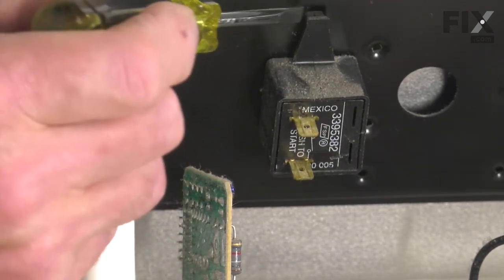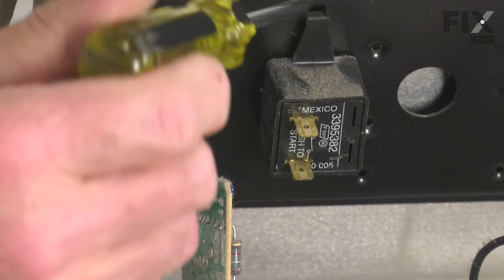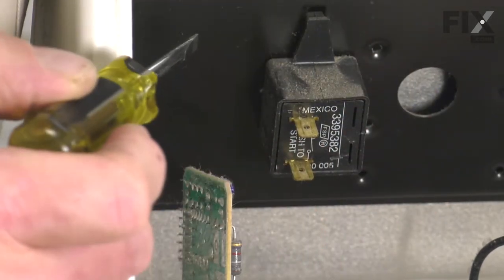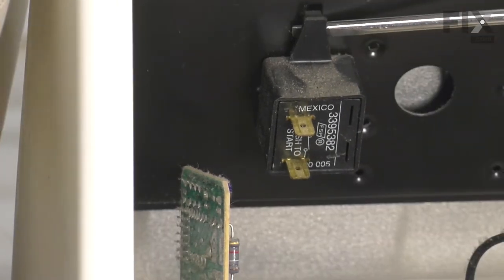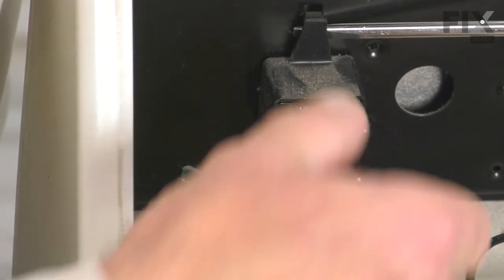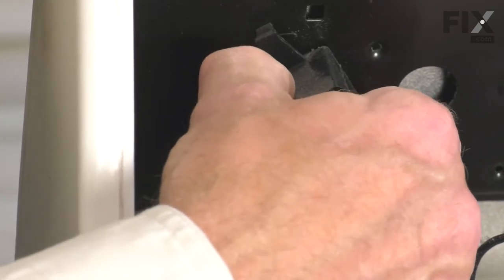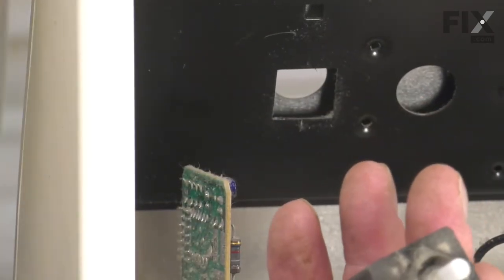Now, you'll also note that there is a plastic stop that fits into a little slotted hole in that frame. What we need to do is just lift that stop out of that hole, and then we're going to rotate that switch about an eighth of a turn, and then slide it out. We can discard the old switch.